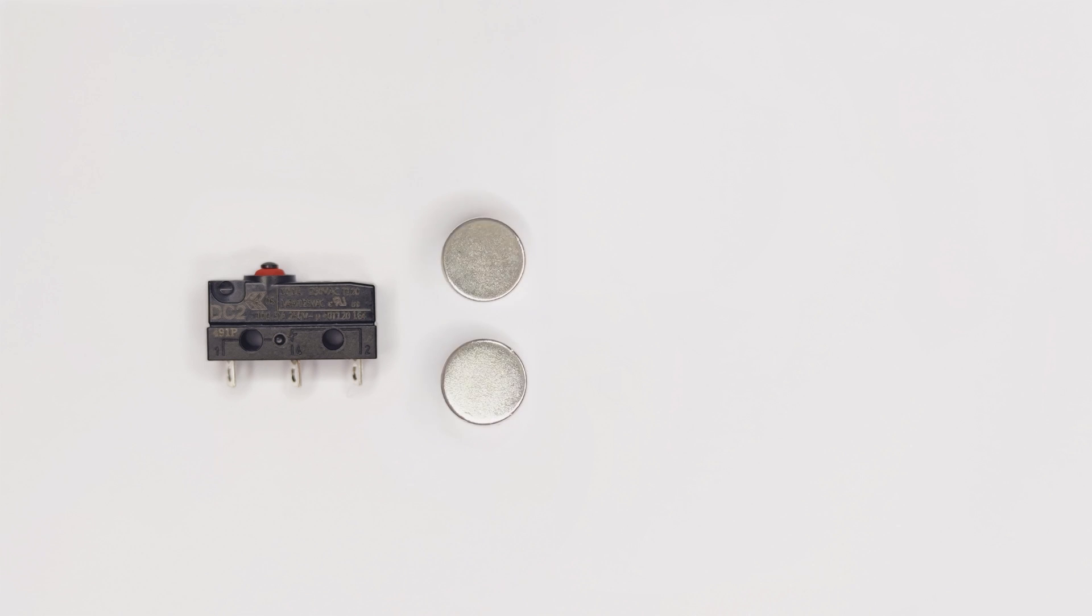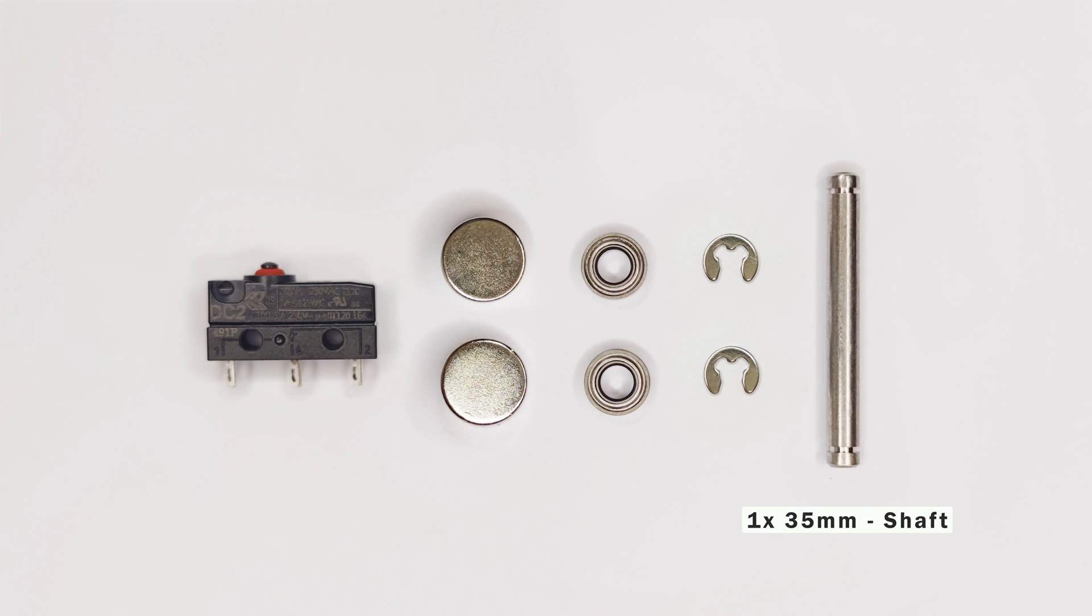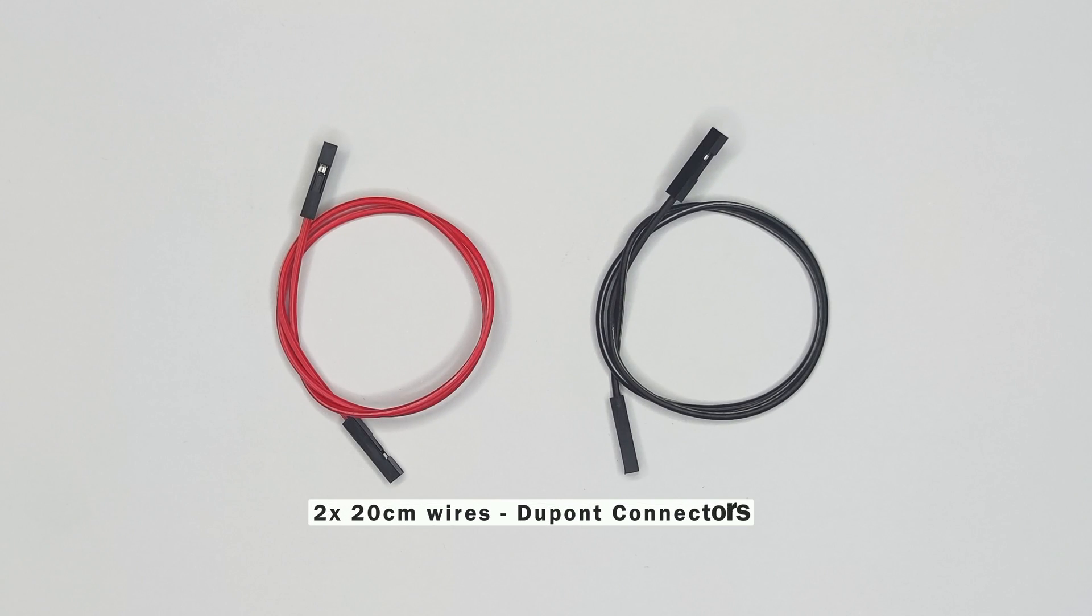To build one single shifter, you're going to need one micro switch with a 9.5mm hole spacing, two 10mm diameter magnets, two 8mm outer diameter ball bearings with an inner diameter of 4mm, two circlips with an inner diameter of 3mm, and one 35mm long shaft with a diameter of 4mm. For the wiring, two 10-20cm wires to connect the switch to the wheel controller. I like to use DuPont connectors to make the assembly and disassembly quick and easy.